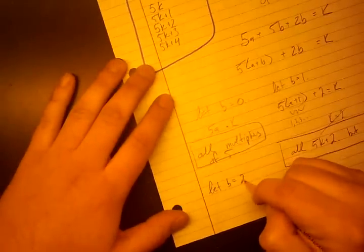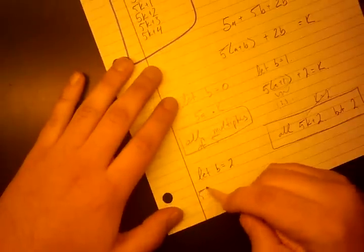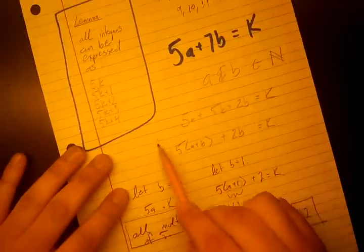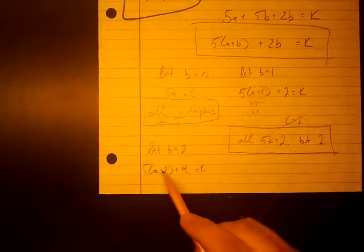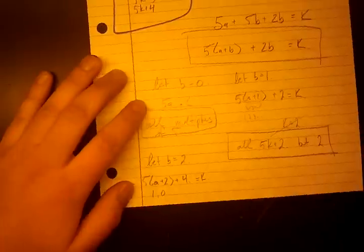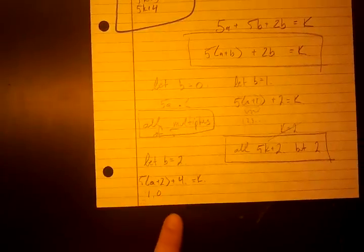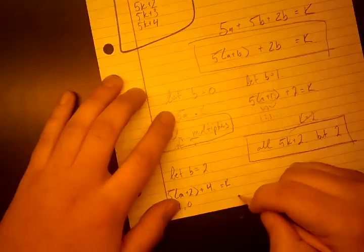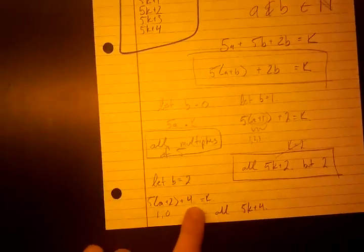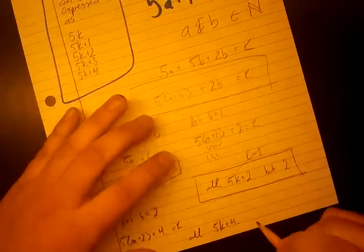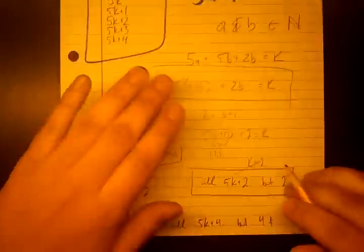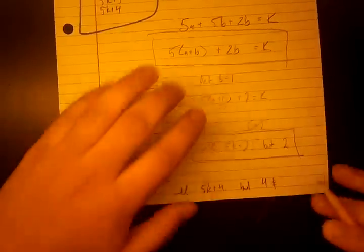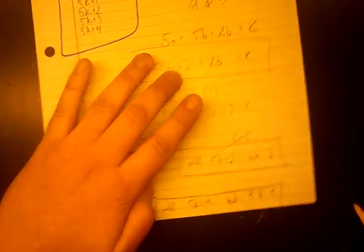So we've seen that we can form all 5K+2, but not 2. So here's the first number we can't form. We're going to go on. We're going to say let B = 2. Now we get 5(A+2) + 4 = K. Remember, we're plugging stuff into this equation. So now A+2 can take all values except 1 and 0, right? Because it can't be 1 because then A is -1. It can't be 0 because A would have to be -2. So that means we can form all 5K+4. See how our term outside is 4 now? We can form all 5K+4 except when A+2 is 0. So except 4 and when we put 1 in here, this becomes 9.